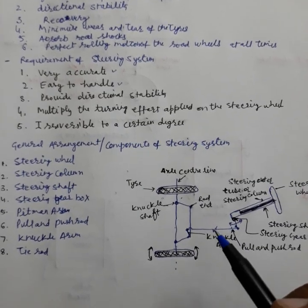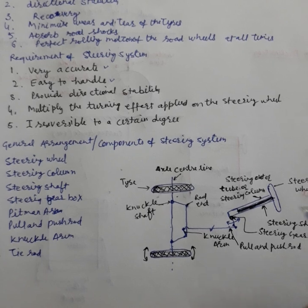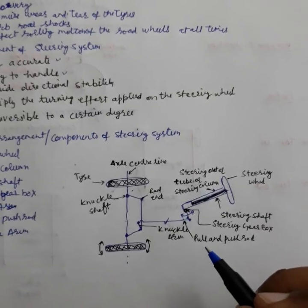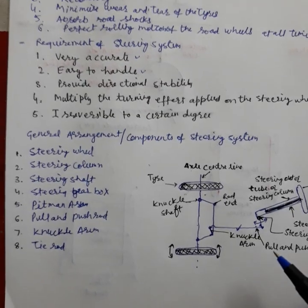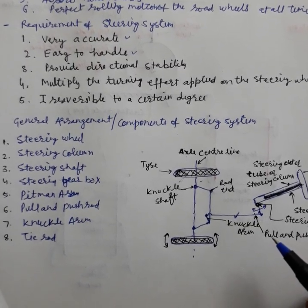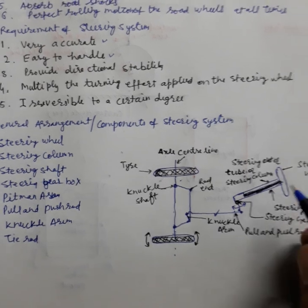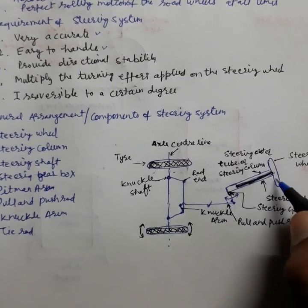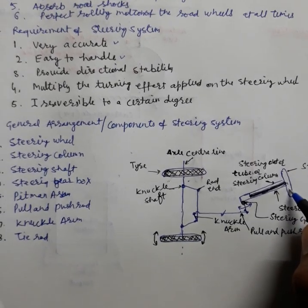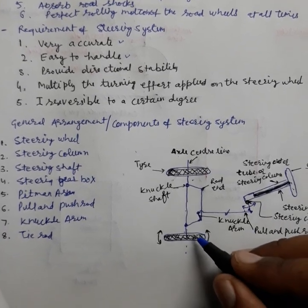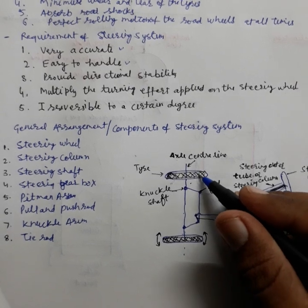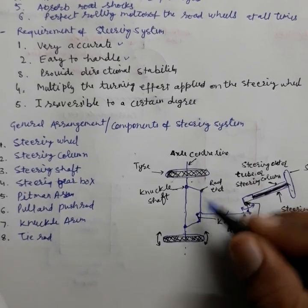This is the general arrangement or you can say components of the steering system. The figure shows the components of steering system. First is the steering wheel. By moving the steering wheel we can tilt the front wheels in the desired direction.